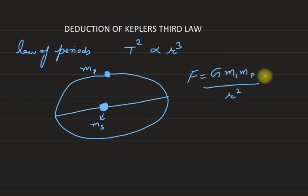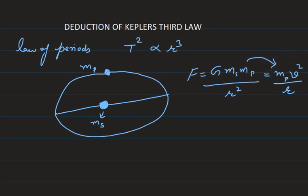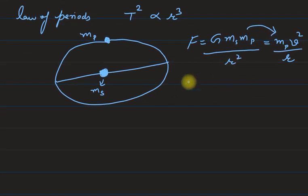This gravitational force provides the necessary centripetal force for the planet to orbit. We know that centripetal force expression is simply mass of planet times v² upon r. So this gravitational force is providing that centripetal force for the planet to orbit, so we can equate these two forces. G ms mp upon r² is equal to...